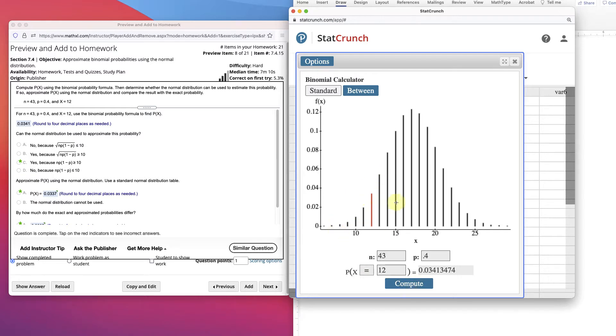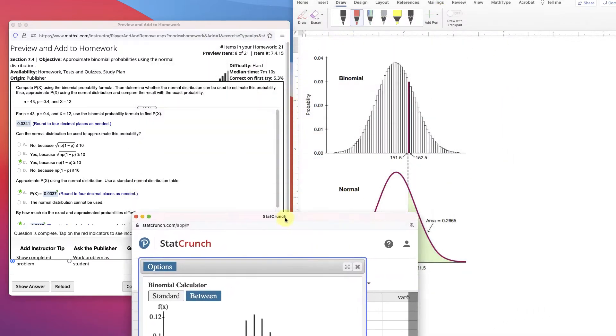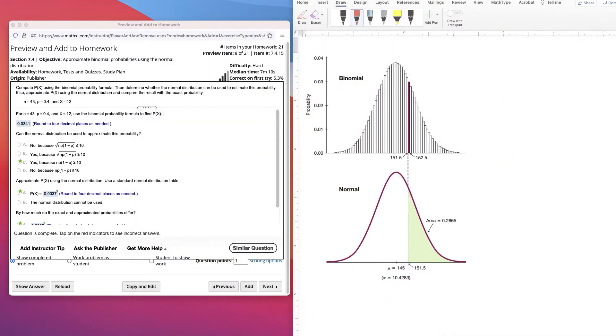Now you'll notice our little rectangle graphs. There's exactly 12, and the probability of hitting exactly 12 is 0.03413. Now we'd like to do a normal approximation to that data, but in order to do that, we're going to need a mean and a standard deviation.